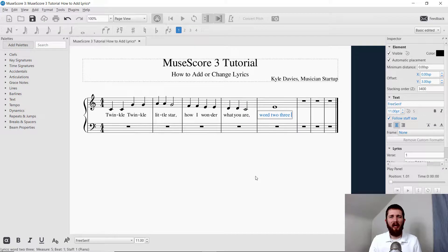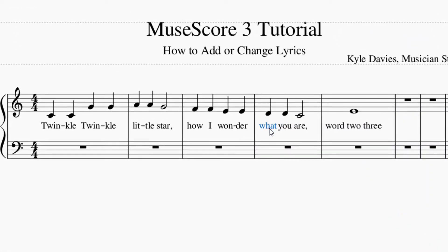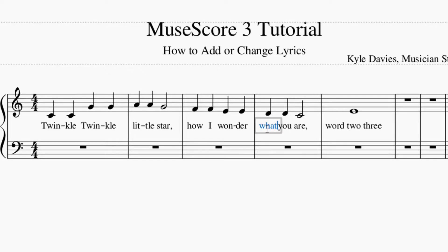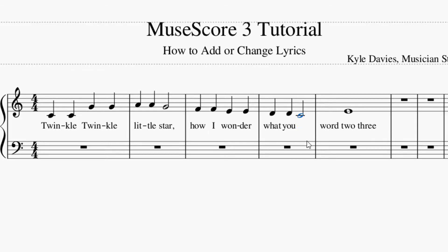I also wanted to point out how to change or delete lyrics once you've entered them. Let's say you want to change the word 'what' — make sure you are in selector mode, then just double-click on it, and it will highlight the lyric so you can change the word right there to whatever you'd like. To delete a lyric, highlight it, and once it turns blue just hit the Delete button and that lyric will be deleted. That's the main way to change or delete any lyrics you have put in your piece.